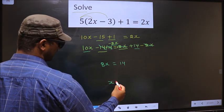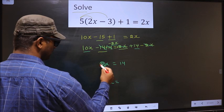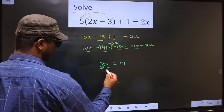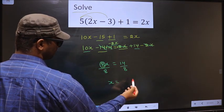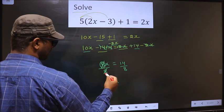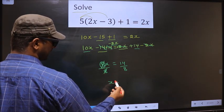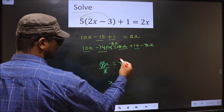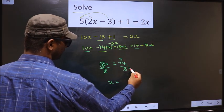Now to get x, we should remove 8. To remove 8, you divide by 8 on both sides. Now this cancel out, here you get x, and here two 7's, two 4's.